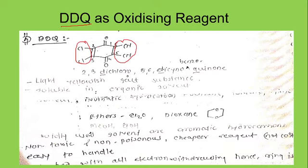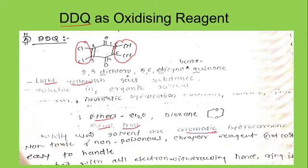Let us learn the physical properties of DDQ. These are light yellowish in color. They are mostly soluble in organic solvents like ether, dioxane, methanol, and ethanol. But the widely used solvents are aromatic hydrocarbons, because these are non-toxic, non-poisonous, cheaper reagents and also easy to handle.